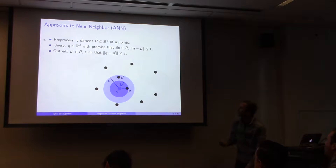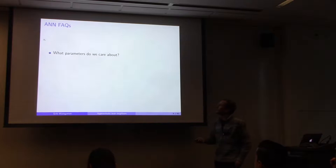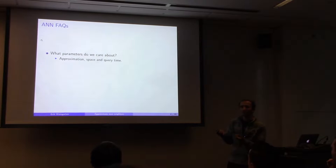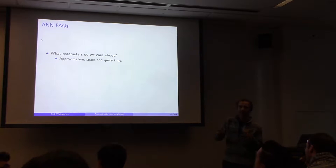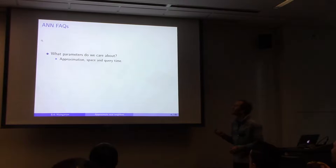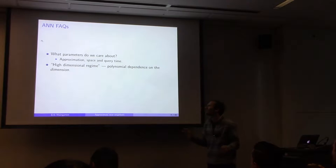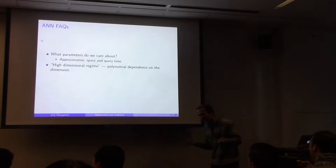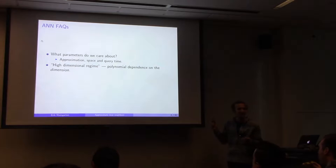The main parameters we care about: we want to optimize the approximation factor C — ideally as close to 1 as possible — while keeping the total space of the data structure small and the query time fast. In particular, we want to do better than scanning the entire dataset. We want all this in the high-dimensional regime, meaning if our vectors are in d dimensions, we want dependence on d to be at most polynomial.